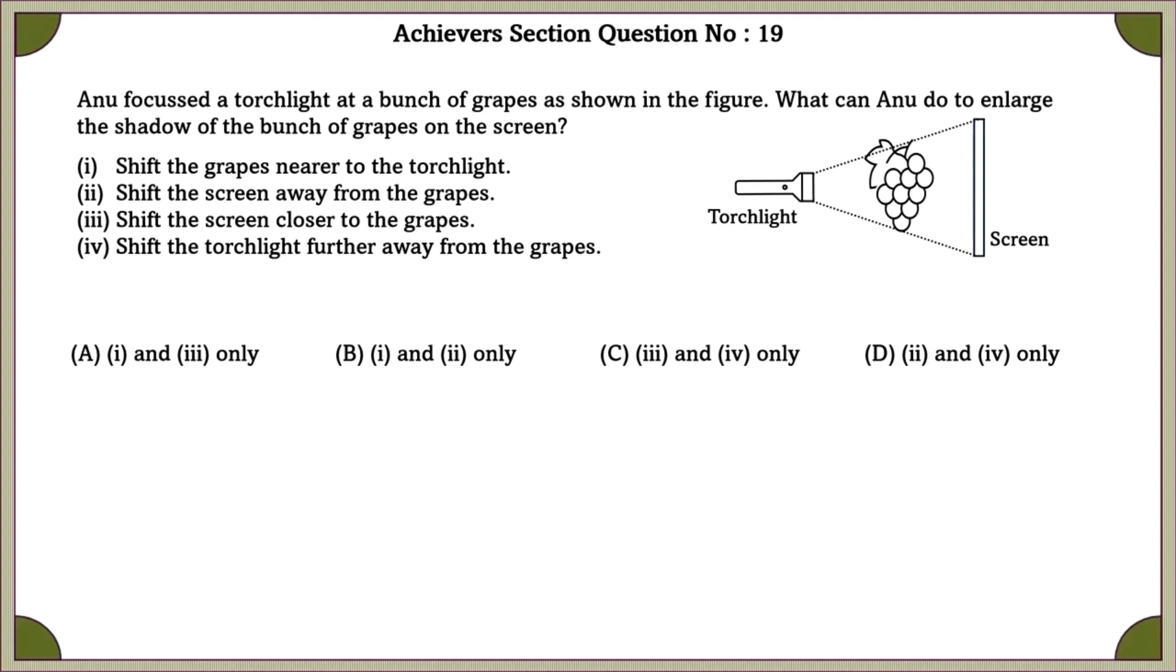Achievers section question number 19. Anu focused torchlight at a bunch of grapes as shown in the given figure. What can Anu do to enlarge the shadow of a bunch of grapes on the screen? First one, she can shift the grapes nearer to the torch. Yes, this is true. If you shift the grapes nearer to the torch, the image will be enlarged. Shift the screen away from the grapes. Yes, this is also true.